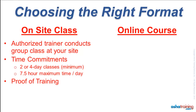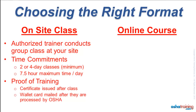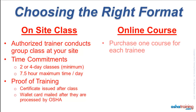Once the on-site OSHA training class is completed, all students who successfully finish the course will receive a personalized certificate of completion, and the official DOL wallet card will be mailed after it has been processed at the OSHA Education Center. The online OSHA 10 and 30-hour courses are designed to be taken by an individual student. A student can register on our website, or it can be done by someone else from their company or organization. There is also a link on our website for registering multiple students.